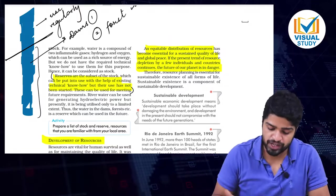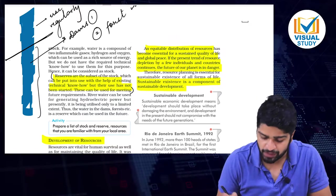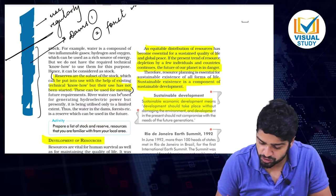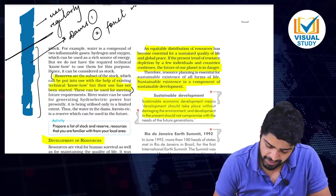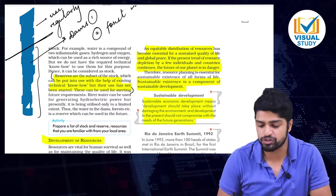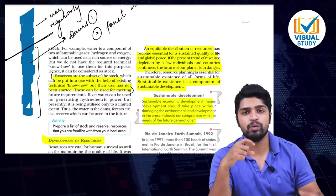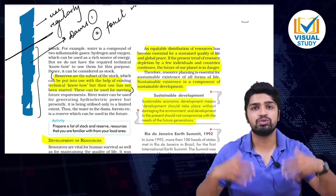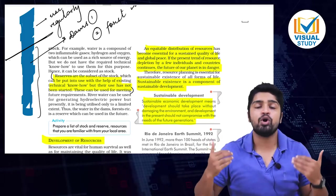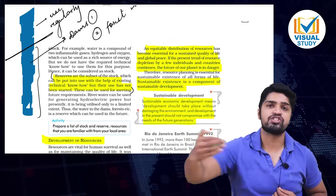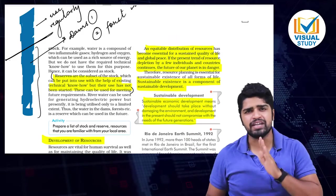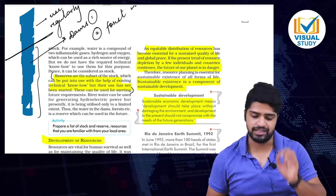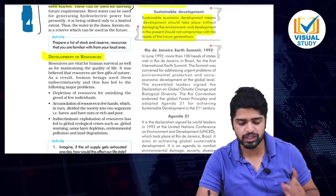Sustainable development means development should take place without damaging the environment, and development in the present should not compromise the needs of future generations. We should not damage existing resources to the extent that causes extreme harm or stops the development of future generations. This is called sustainable development.